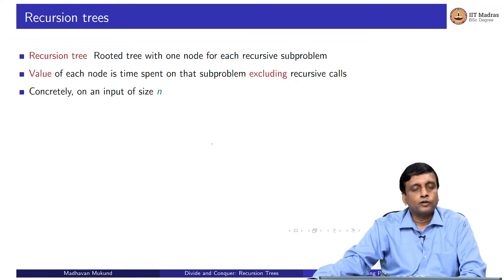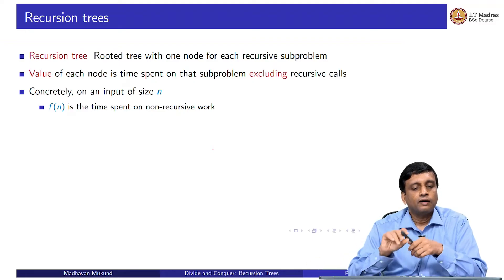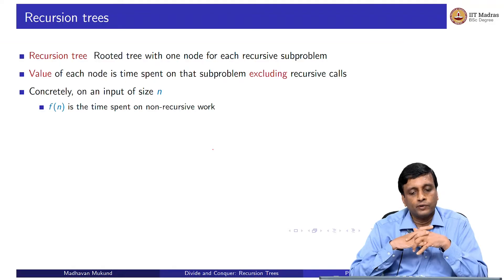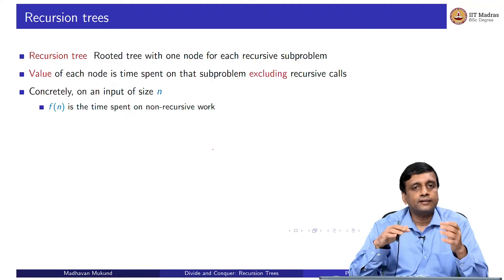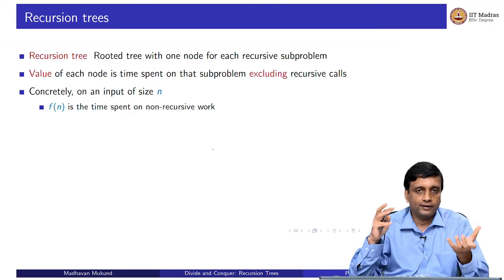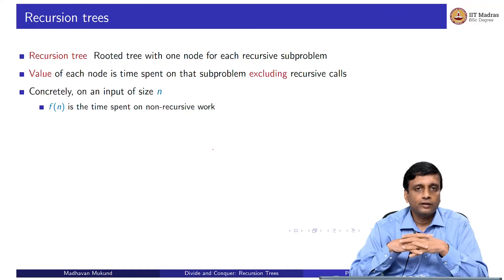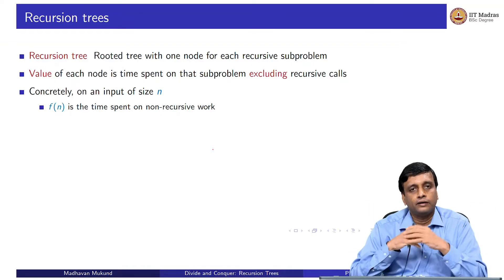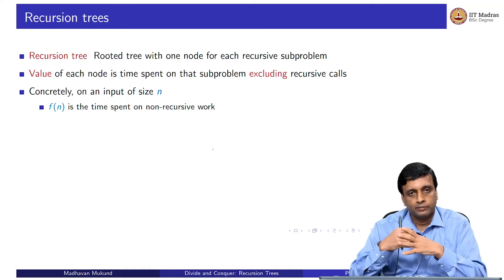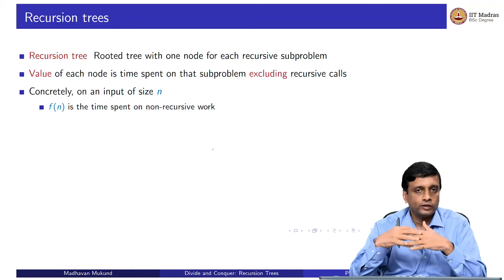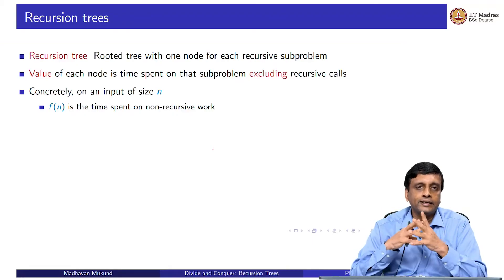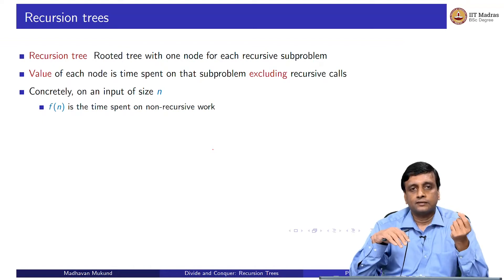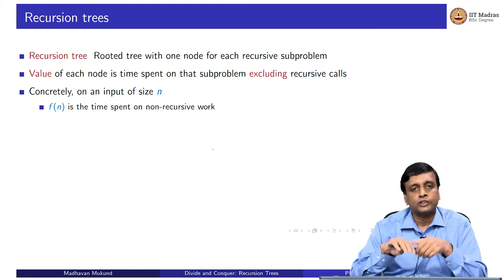Concretely, for an input of size n, we spend some function f(n) on non-recursive work. Usually this is O(n) — for example, partitioning in quicksort or merging in merge sort. In rare cases like binary search, this work is O(1) since we just find the midpoint. So f(n) is some function of n representing the non-recursive cost.